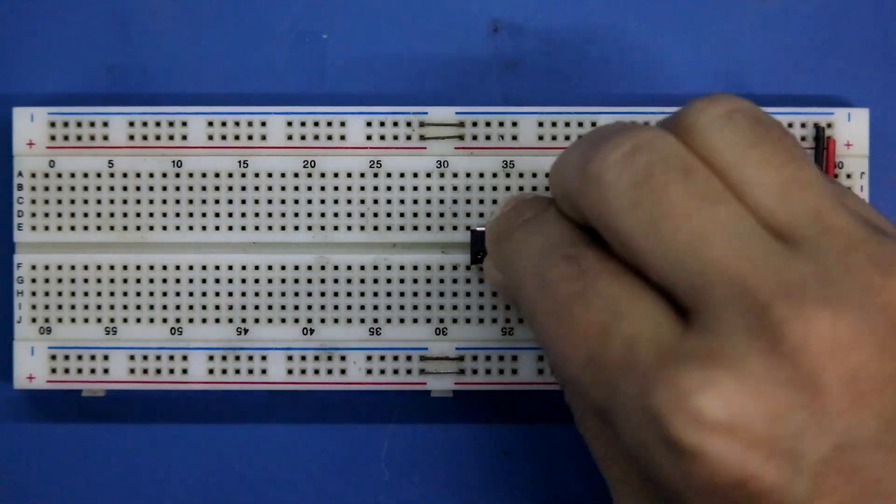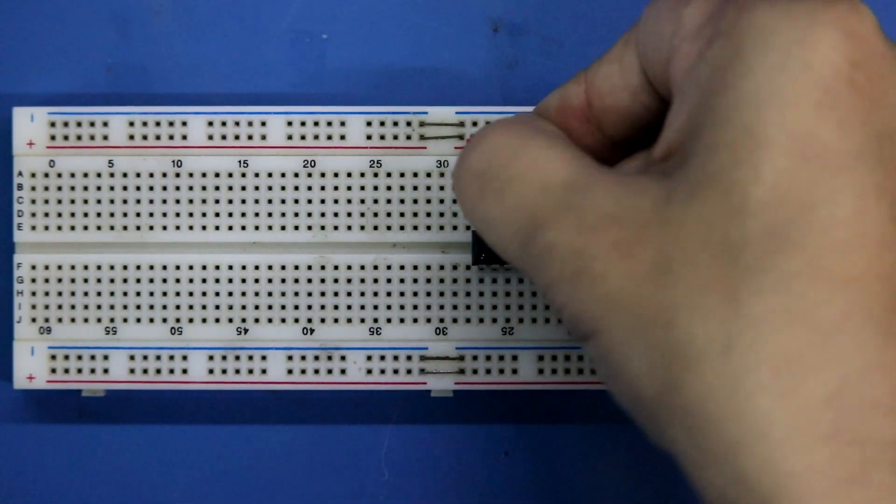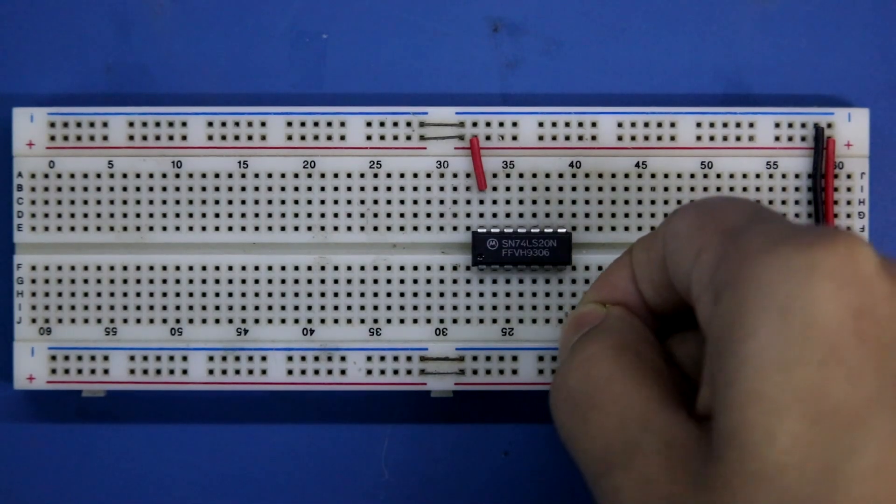Putting the IC. Pin 14 is connected to the positive rail. Pin 7 is connected to the ground.